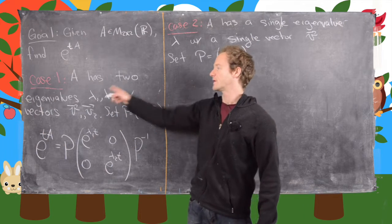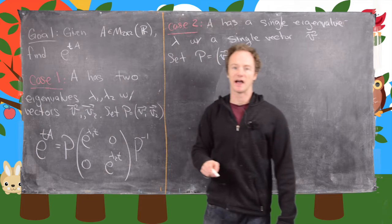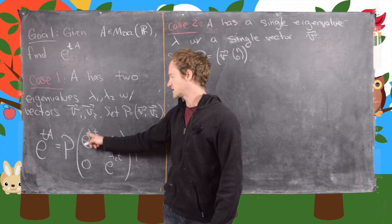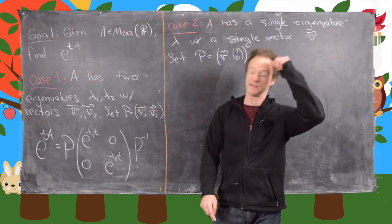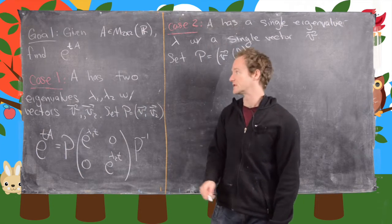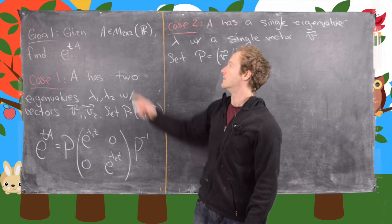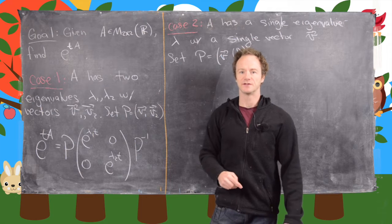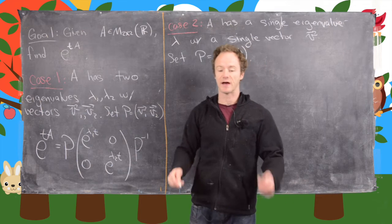You might ask: what if these are complex numbers? Well, that makes these complex conjugate eigenvectors as well, which makes this a complex number inside the exponential, which turns it into sines and cosines. But when you multiply it all out, all the complex numbers will disappear because we started with something that was a 2x2 real matrix. I'll have some videos in the future where we solve differential equations like this and we'll see everything cancel.